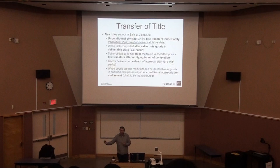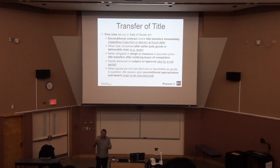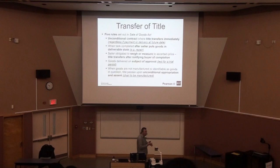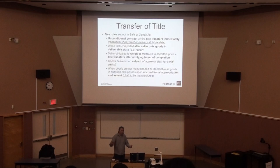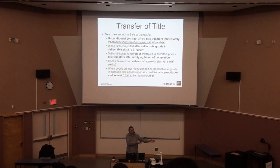The third rule is when the seller has to either weigh or measure the products before the buyer can know what they're actually buying. This is very common for liquids — gasoline, oil — or grains. If I'm purchasing two tons of soy or corn, for me to know the price I'll be paying, the goods have to be weighed or measured. Only after weighing or measuring does title pass to the buyer. Before that, title and risk remain with the seller.